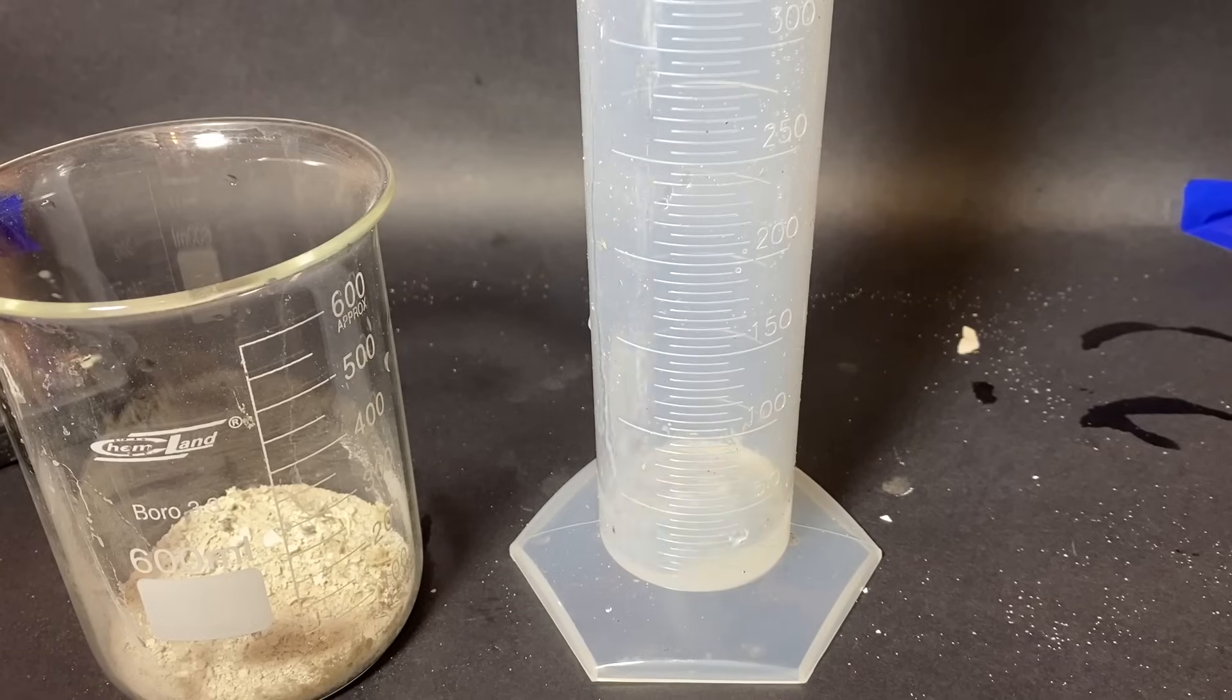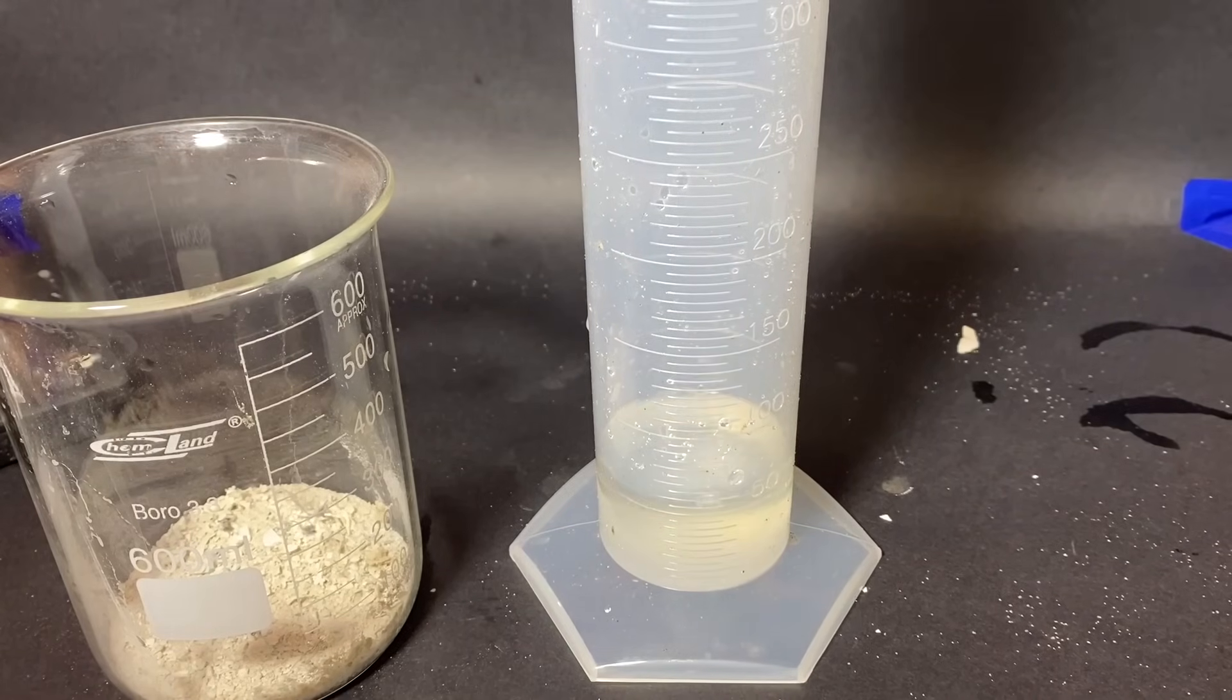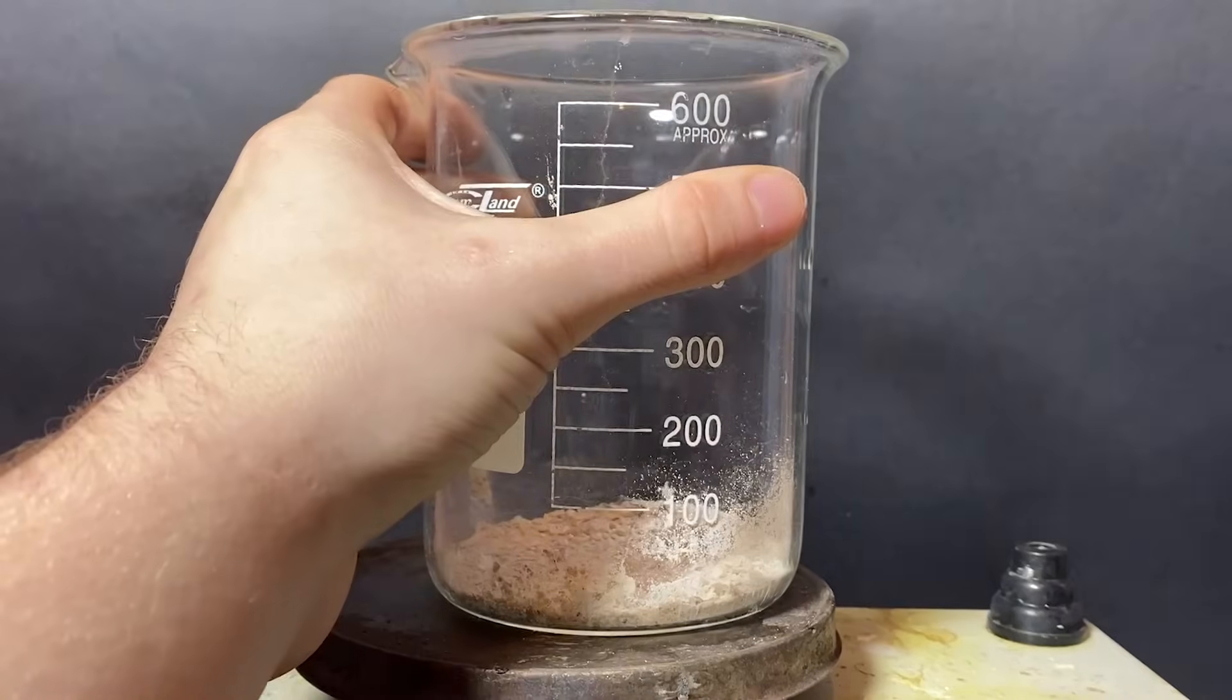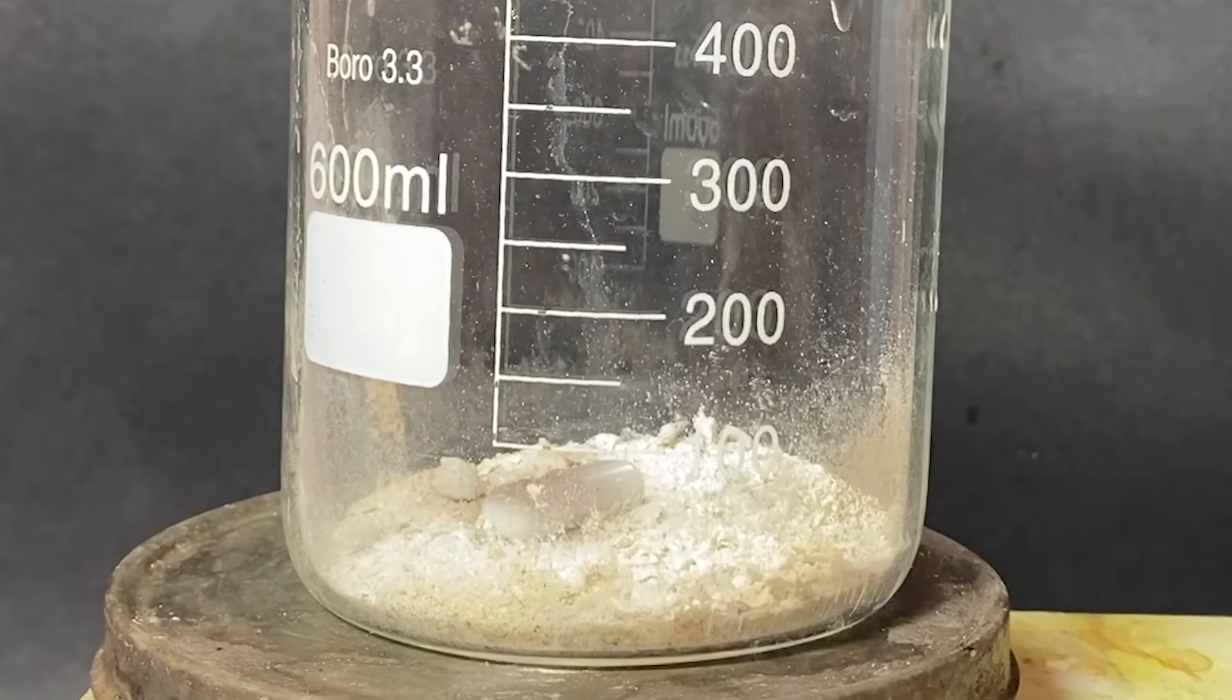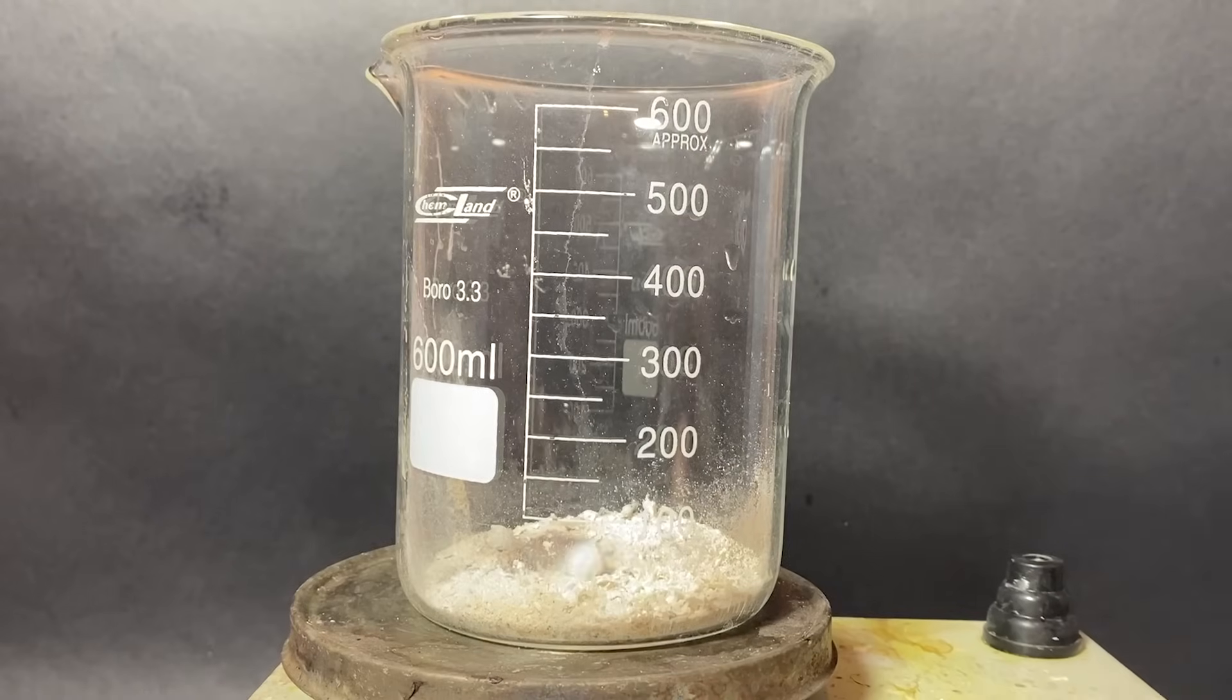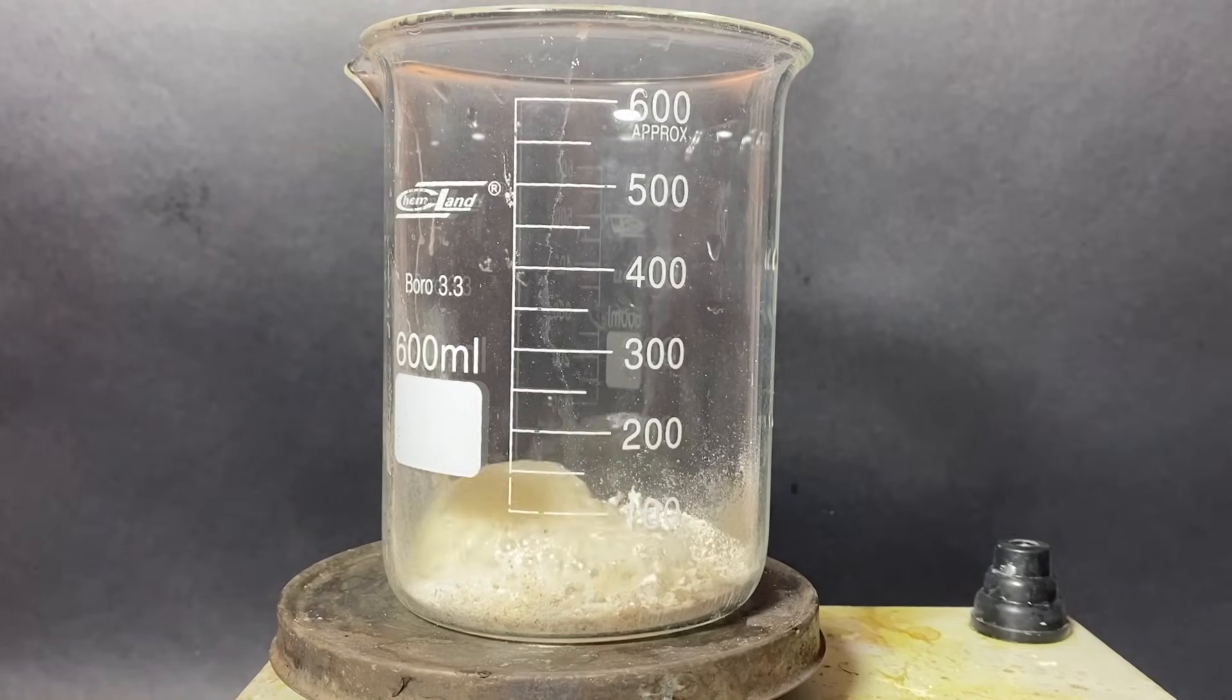Next I measured out around 50 ml of 30% hydrochloric acid. Then the beaker containing the calcium carbonate—yes I'm gonna stop referring to it as seashells—has been transferred onto a hot plate and then I've turned on the stirring. Next I started pouring in some of the concentrated hydrochloric acid and immediately you can see a really intense reaction happening.